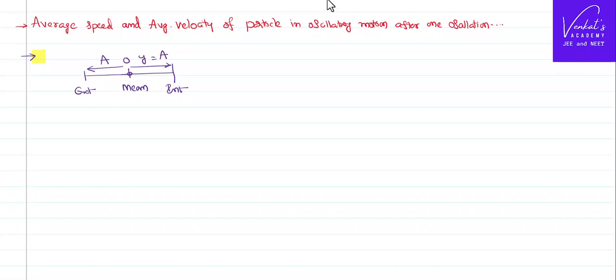So if your body starts, say for example, from extreme position, it has to cross mean position, go to interim position, it has to come back again, cross the mean position and come back to extreme position. That is the completion of one oscillation. That's the meaning of one oscillation.